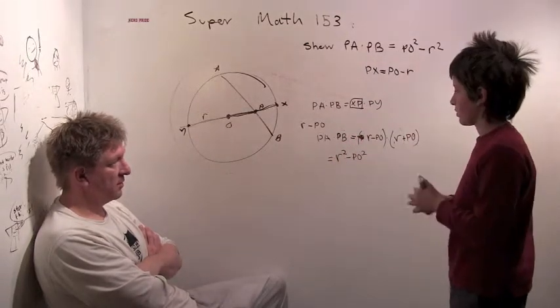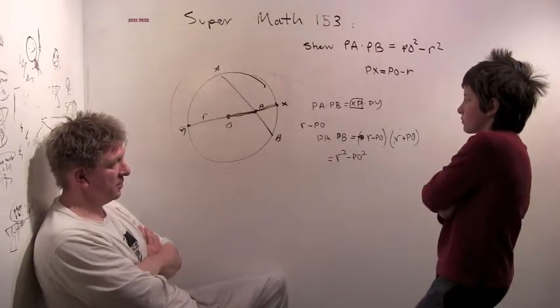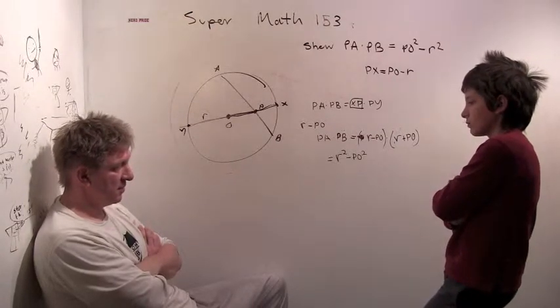So, there you go. The formula flips around. So, outside of the circle, it's PO squared minus R squared. Inside of the circle, it's R squared minus PO squared.